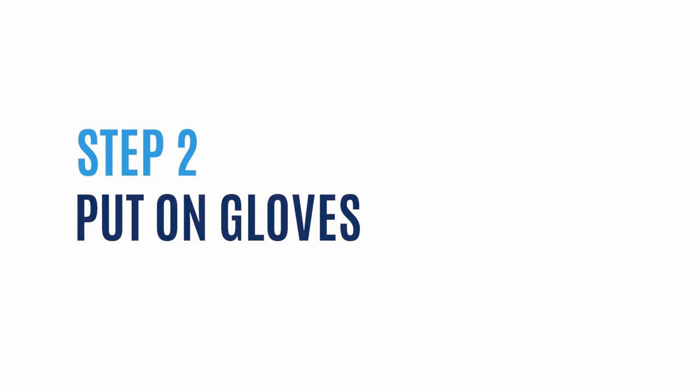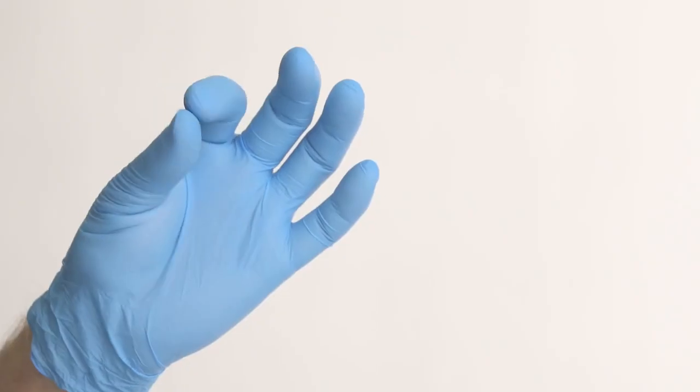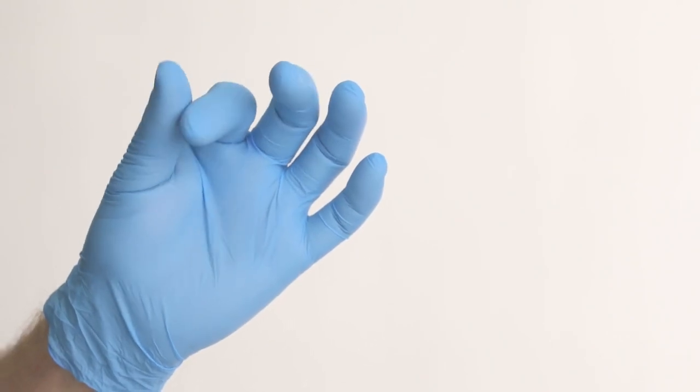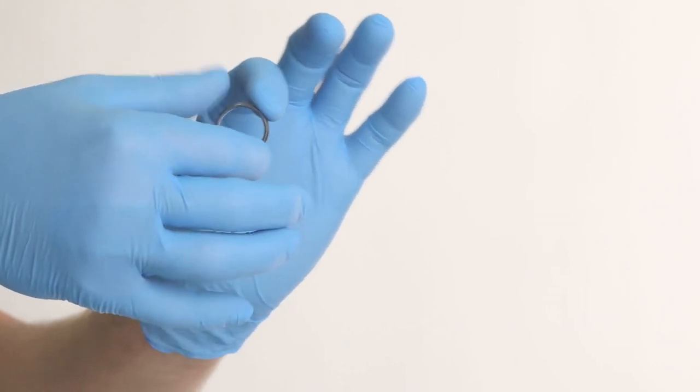Step 2: Time to put on your gloves. Place the gloves on your hands for proper ring removal. The purpose of the gloves is to provide traction with the ring when the lubricant is applied. This is especially important when you're trying to remove a smooth wedding band.